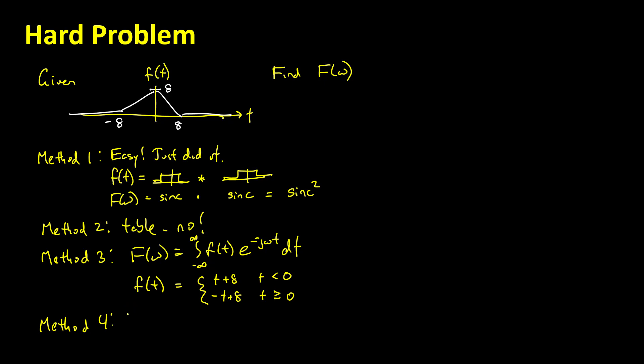Method four is to use the derivative property. This is a great shortcut to use whenever you're taking Fourier transforms or inverse Fourier transforms of functions that are flat, or that you could imagine how to take a derivative of. So how hard would it be to draw the derivative of that function? Well, it's clearly 0 out to negative 8, and then at negative 8 it jumps up to having a slope of 1.